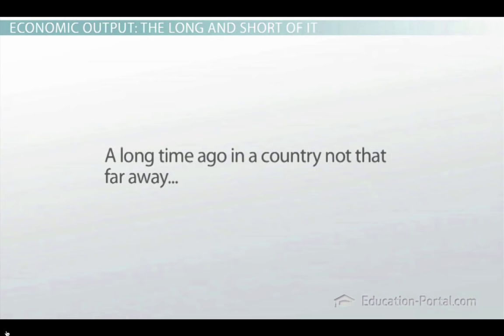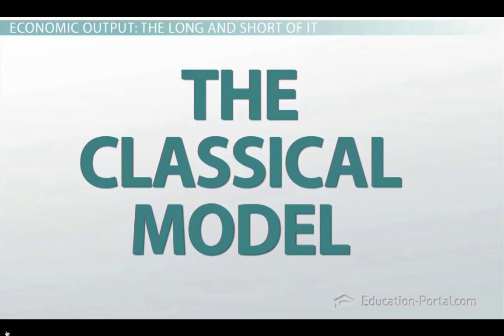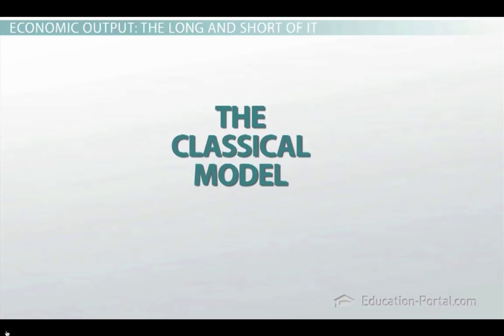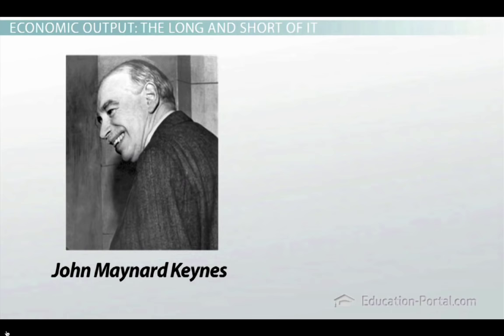Over the years, economists came up with two basic models of the economy. There are other variations, but these are the basic concepts. The first one is called the classical model — it's an old model, very old. When you hear the words classical model, you can think of Beethoven wearing that really weird wig. The other model is called the Keynesian model, named after the famous economist John Maynard Keynes. This is a newer model. When you hear the word Keynesian, just think of the Great Depression, because this model came about as a result of the Great Depression.